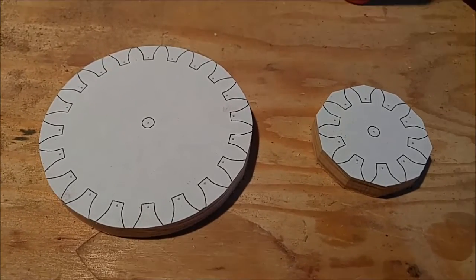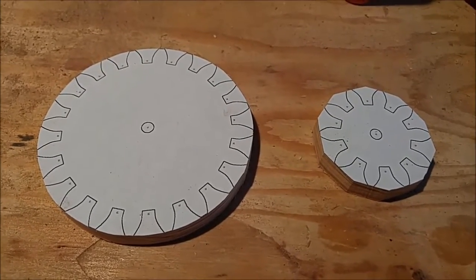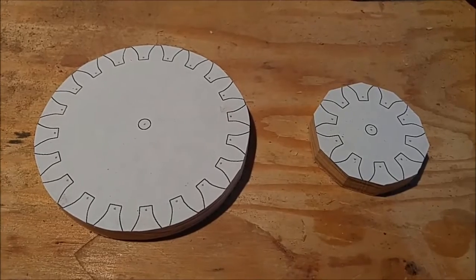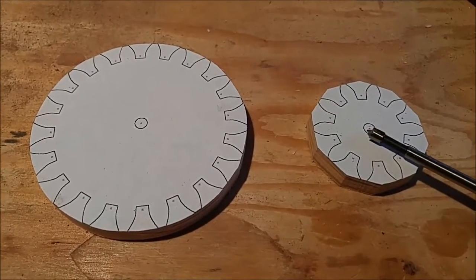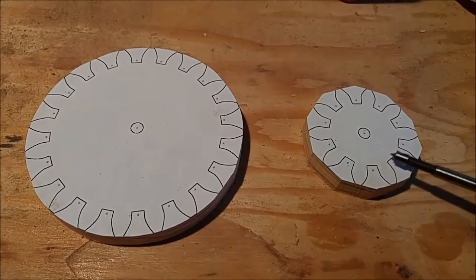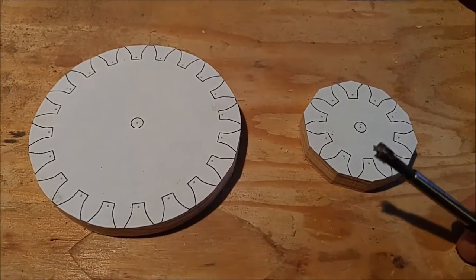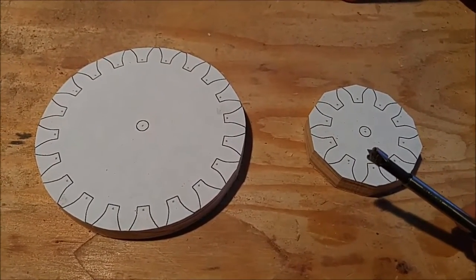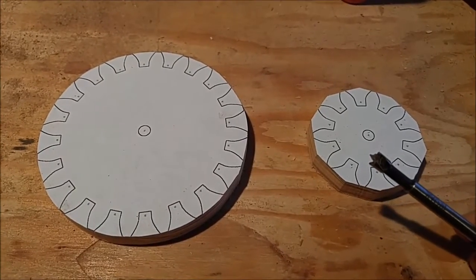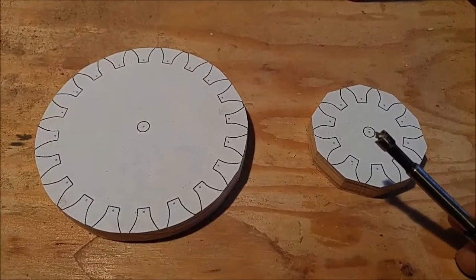The next step is going to be to drill out the center holes in the gears and then also drill out the bottom land areas around the gear. I'm going to use a Forstner bit instead of a standard drill bit for a couple of reasons.